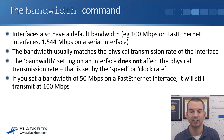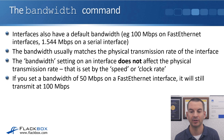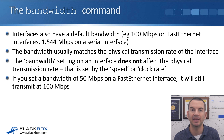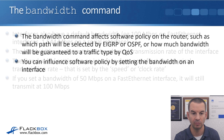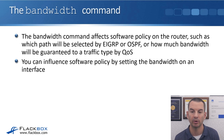The bandwidth setting on an interface does not affect the physical transmission rate — that is set by the speed or the clock rate. So if you set a bandwidth of 50 megabits per second on a fast Ethernet interface, it will still transmit at 100 megabits per second. If the bandwidth setting does not affect the actual physical speed, what does it do? It affects software policy on the router, such as which path will be selected by routing protocols like EIGRP or OSPF.